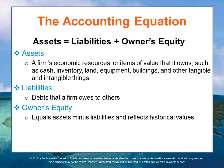Double-entry bookkeeping allows one to do that. When you buy something new, you record whether it's an asset and whether you borrowed money to get it or it came from owner's equity — so there's an asset entry and a liability or equity entry. The most important thing to realize is that mistakes can be caught because you're making two entries, so everything has to add up. If there's an error, you know you made one and can go find and fix it.